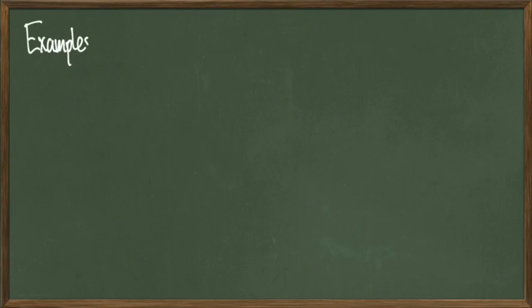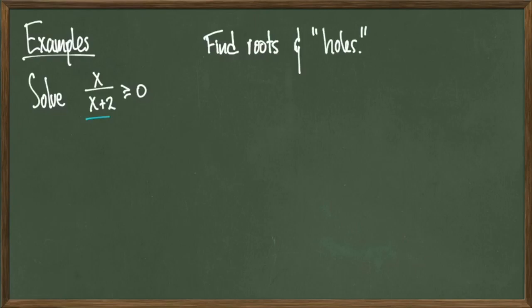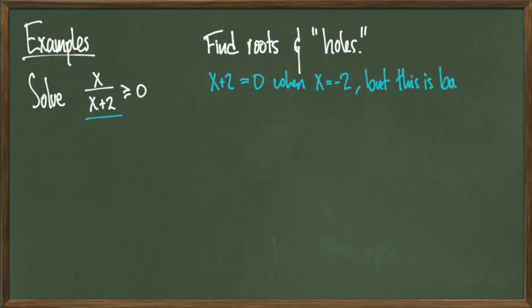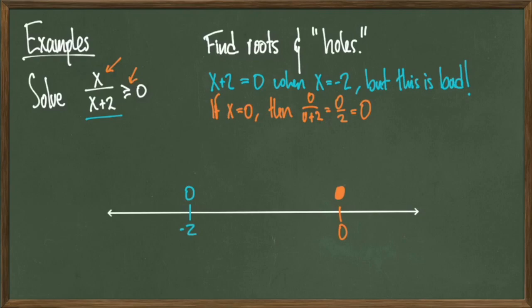Let's look at another example, similar to the one we just did. Consider the inequality x over x plus 2 is greater than or equal to 0. This is already in the form I want because I have an expression on one side and 0 on the other. Looking at the denominator, if I set x plus 2 equal to 0, I get x equals negative 2, which is a point I should avoid because it makes the denominator equal to 0. Setting the numerator equal to 0, I simply get x equals 0. So I can go ahead and plot them on the number line. Since negative 2 is a hole, I put an open circle above it already.